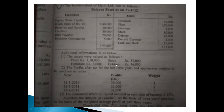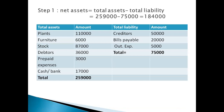We have net assets: fixed assets and current assets. They have new value as per additional information. Plant, machinery, stock and debtors have new values. Old value and book value are considered. Goodwill will follow 5 steps. The first step: net assets is equal to total assets minus total liabilities.